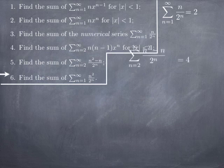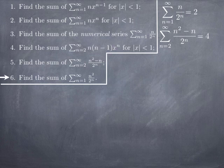So the sum of our numerical series is exactly 4. Again, we get the exact sum. In the last question, we want to find the sum of one more numerical series, specifically the sum from 1 to infinity of n² over 2^n.